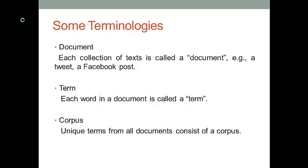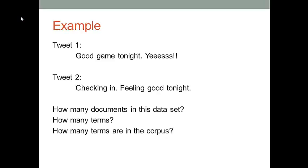It's like a dictionary. It covers all unique terms from all documents in a textual data set. Notice that a corpus only consists of unique terms. A term could appear in many documents many times, but it is only taken by corpus once. Let's use these concepts to answer some questions. We have two tweets. Good game tonight. Yes, this is the first tweet. Second tweet is checking in, feeling good tonight. Use the concept we just learned to answer the following three questions. How many documents in this data set? How many terms? How many terms will be taken in the corpus?